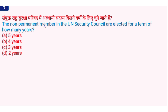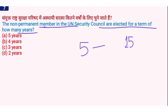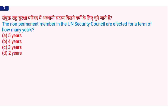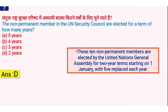The non-permanent members of the UN Security Council are elected for a term of how many years? The right answer is option D, 2 years. There are 10 non-permanent members who are elected by the UN General Assembly for two-year terms, starting on January 1, with 5 replaced each year. The total non-permanent members of the UN Security Council is 10.